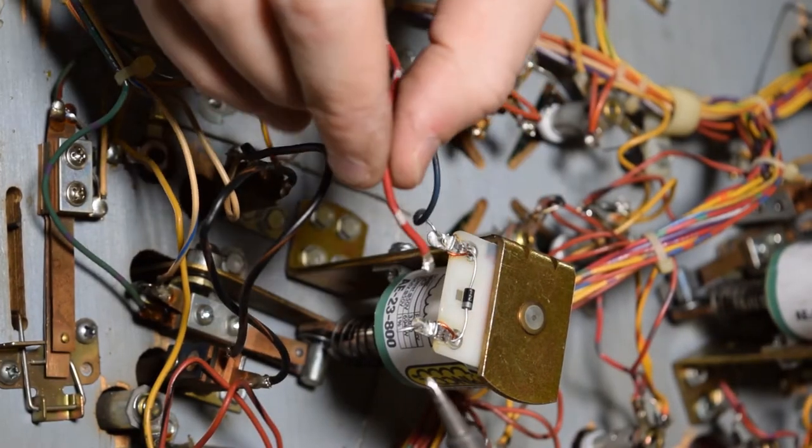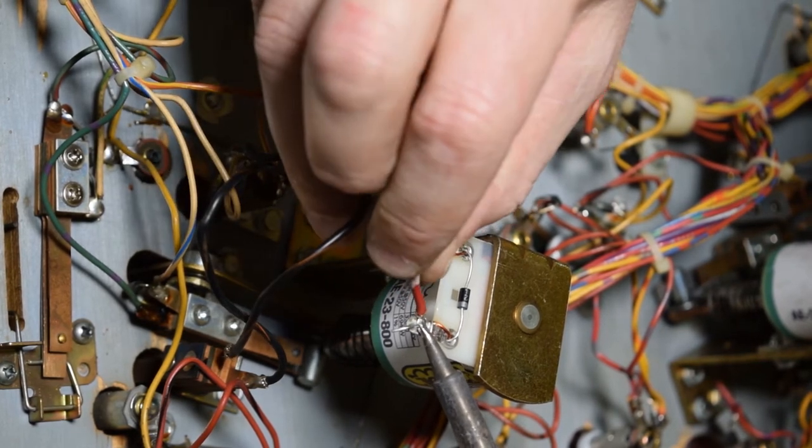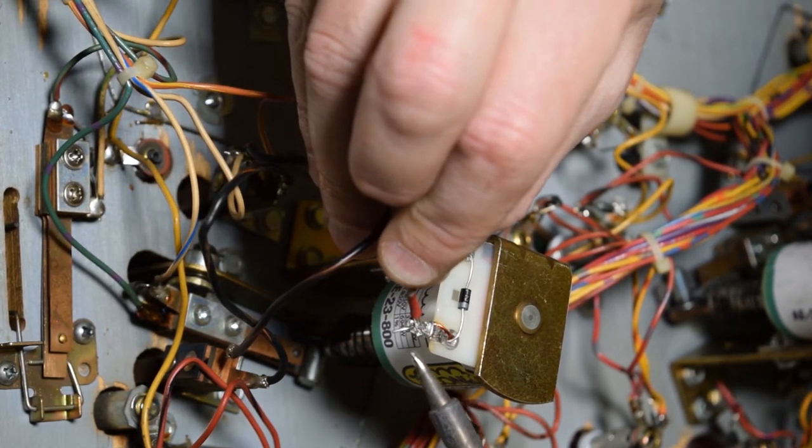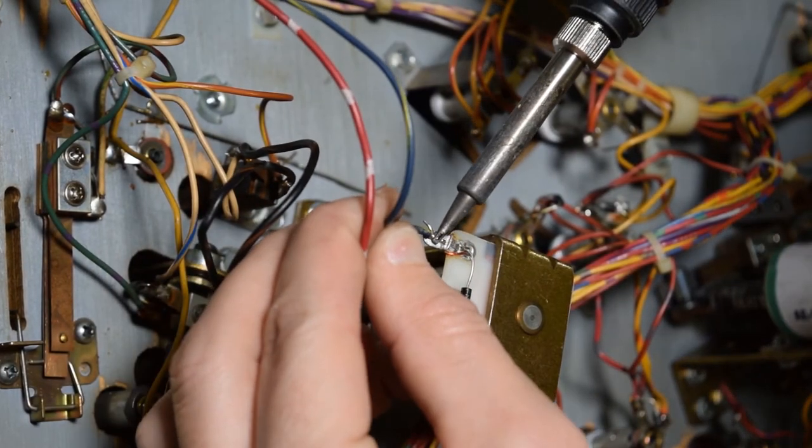With a little solder on the tip of your iron, reattach the first wire to the new coil. Use the picture you took earlier as reference so you can mount the wires properly. Now do this for the other wire as well.